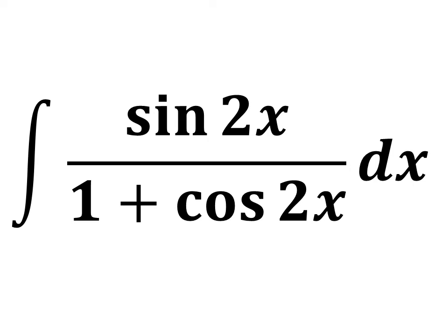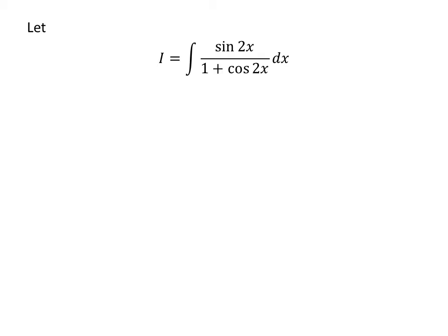In this video, we will solve the integral of sine of 2 times x upon 1 plus cosine of 2 times x with respect to x, by application of simple trigonometry identities. Let I be equal to integration of sine of 2 times x upon 1 plus cosine of 2 times x with respect to x.